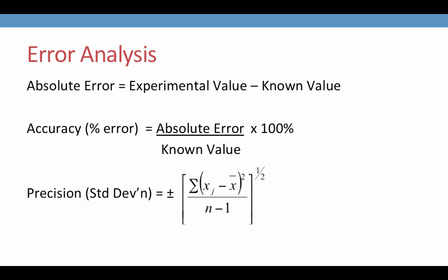To calculate accuracy, simply take your absolute error, including its positive or negative expression, and divide it by the known value and multiply by 100%. Percent error is used synonymously with accuracy.